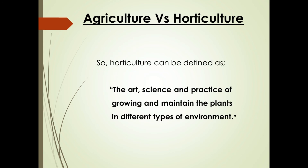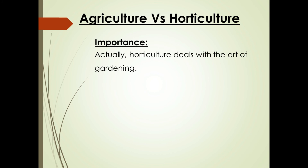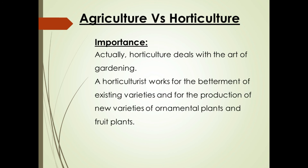So, horticulture can be defined as the art, science, and practice of growing and maintaining the plants in different types of environment. Actually, horticulture deals with the art of gardening. A horticulturist works for the betterment of existing varieties and the production of new varieties of ornamental plants and fruit plants.